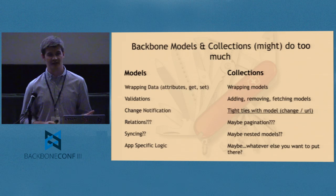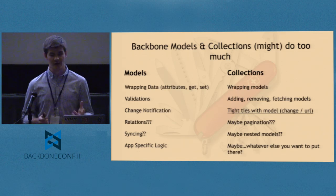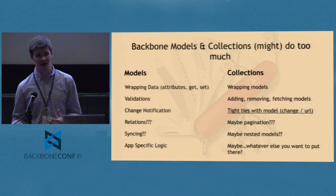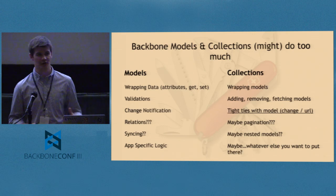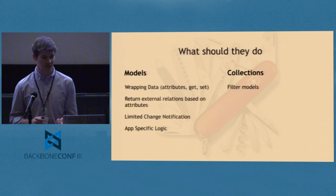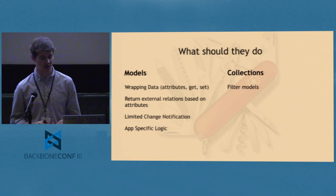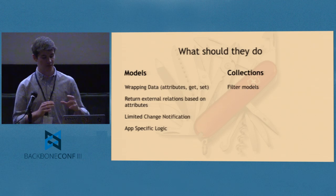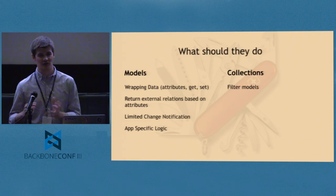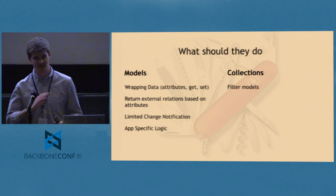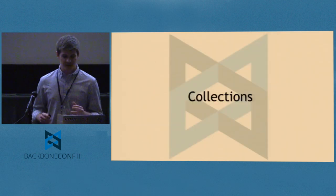Collections wrap models, which is great, but they have very tight ties with models — the model's URL is driven by the collection. There may be nested models and it's up in the air how you should structure everything. In our case, what models have been better suited to do is just wrap data and handle get/set, have limited change notification, and return external relations based on attributes. Collections just filter the models — we stripped out a lot of functionality.